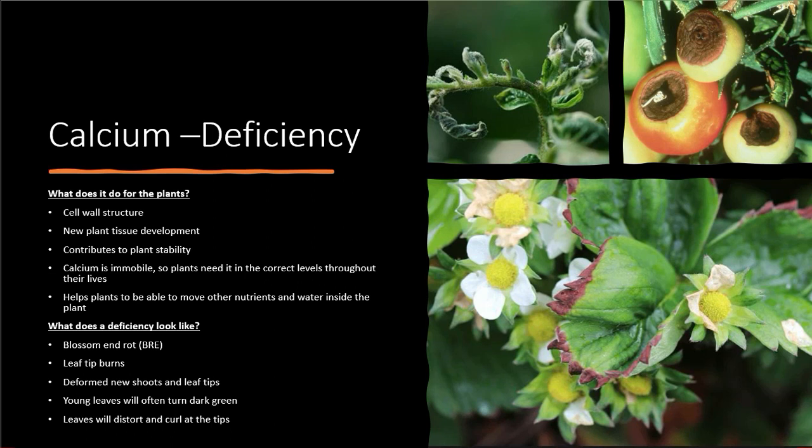On your new growth — this top left picture — you can see how the leaves are deformed and curling up. That's low calcium. And then on your strawberry plant, the leaves being shown are some of the newer growth leaves and they are dying around the tip, so it's becoming a severe issue on these.